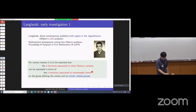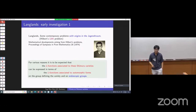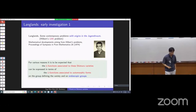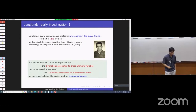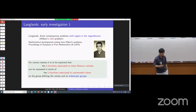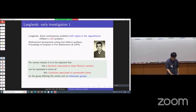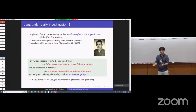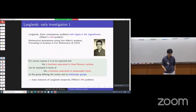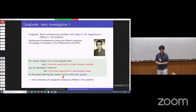These automorphic forms and representations live on the group defining the Shimura variety, but also on certain related groups. These are what we call endoscopic groups nowadays — and actually, endoscopic groups arose in the context of Shimura varieties in the first place. Langlands made this problem more precise over many years in the 1970s and 80s. Notably, this investigation, rooted in Hilbert's 12th problem, led to many new instances of Langlands reciprocity, which is Hilbert's 9th problem — showing a very close connection between the two problems.